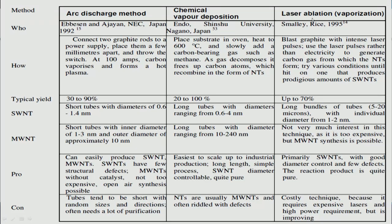In the laser ablation method, laser light is applied to graphite, which produces carbon nanotubes. The yield is around 70%. It is primarily used for single wall nanotubes and produces pure material suitable for biological applications. The drawback is that it is a relatively costly technique.